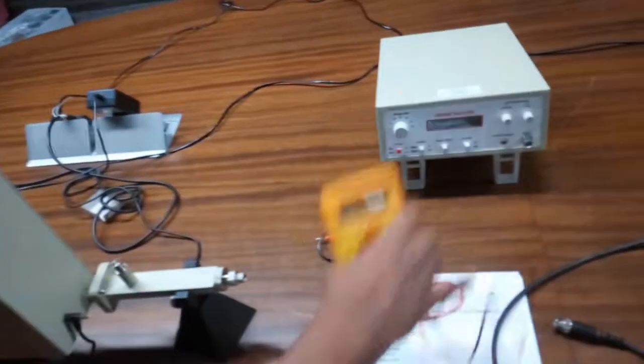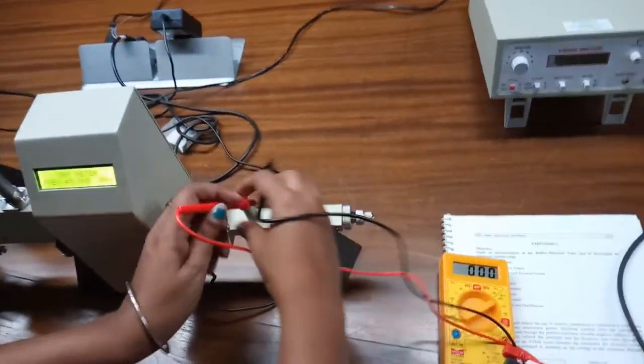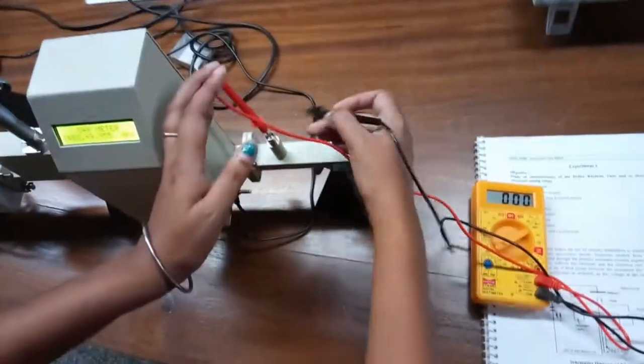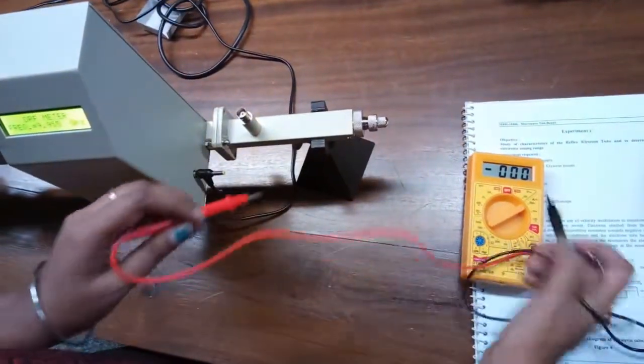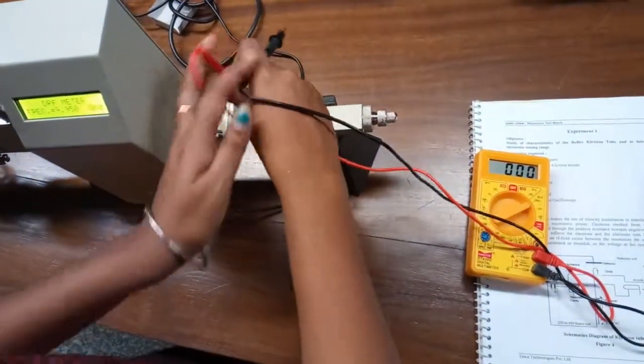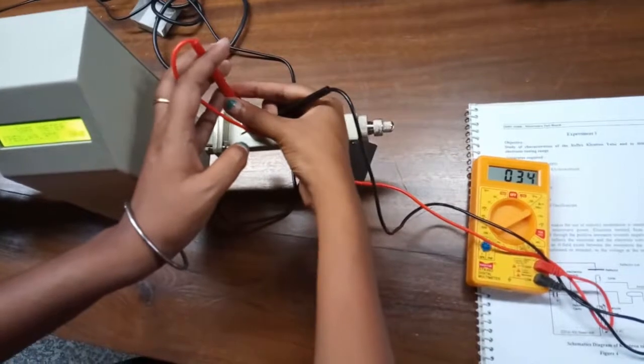Keep the multimeter range in DC microampere. We can see that we are getting around 37 microampere DC current.